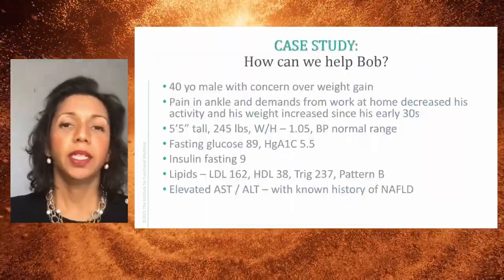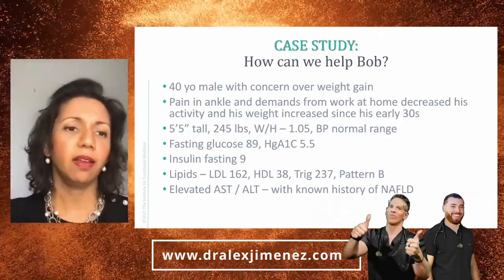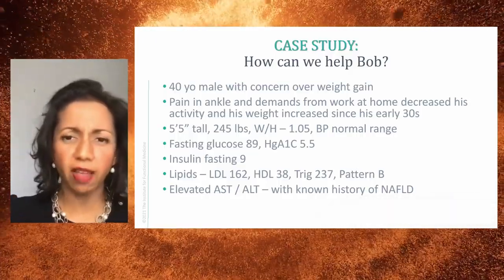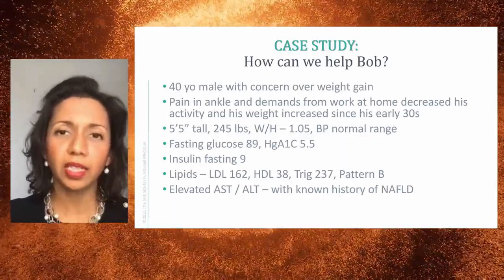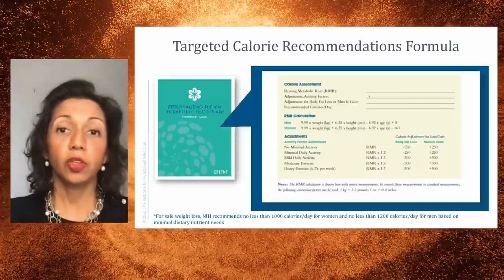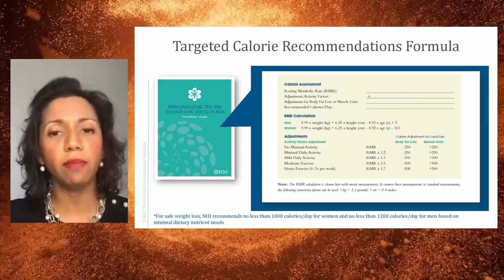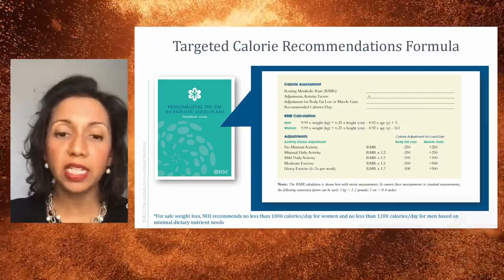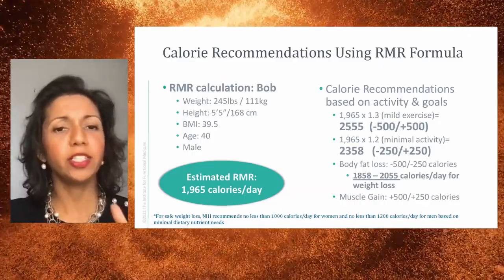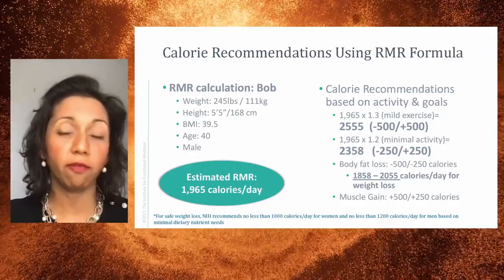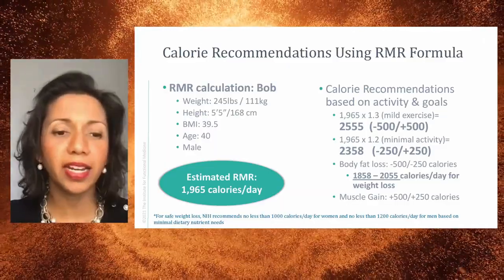Here's Bob—a 40-year-old male, not happy with his weight. He's got some issues like ankle pain, he's 245 pounds at 5'5", and he's got some cardiometabolic issues starting. You look at his numbers and go, this guy could benefit from the cardiometabolic food plan. If you look at the practitioner guide, you can actually calculate some caloric recommendations just from the data points you have from an ABCD assessment. What we're trying to do is calculate the resting metabolic rate for Bob. Plug in the numbers into the formula and it estimates out at 1,965 calories.